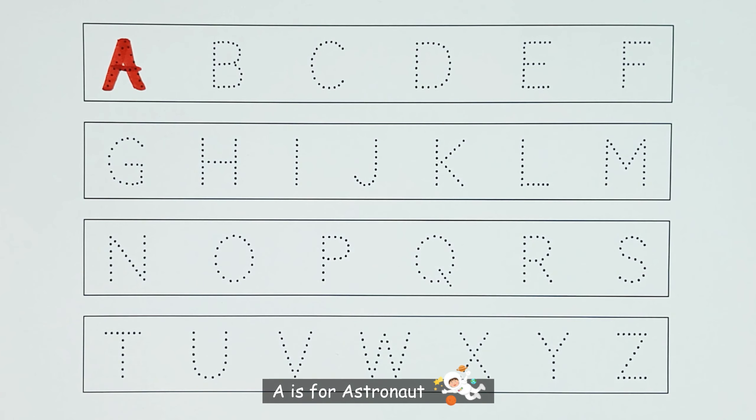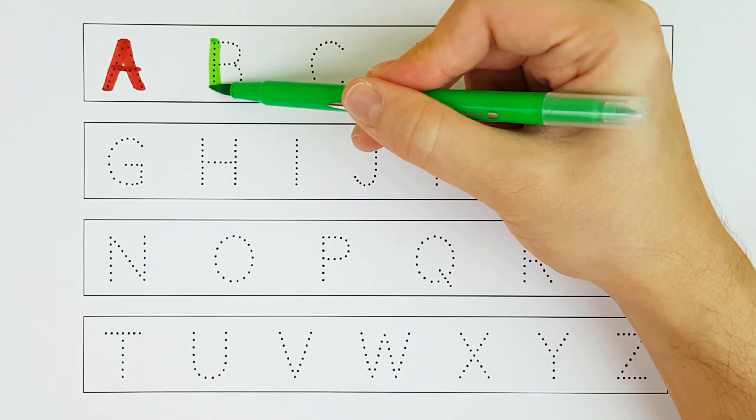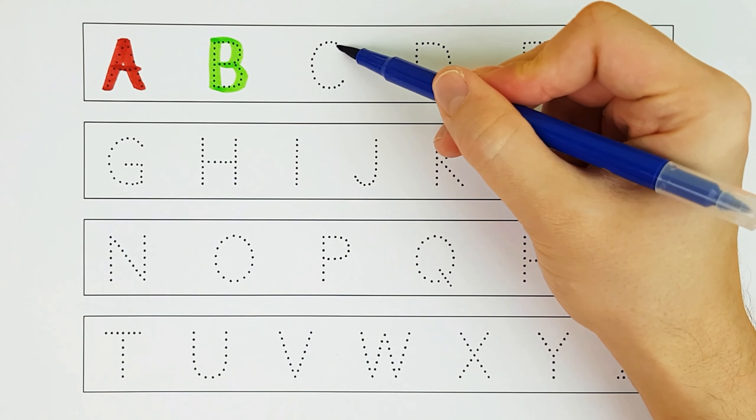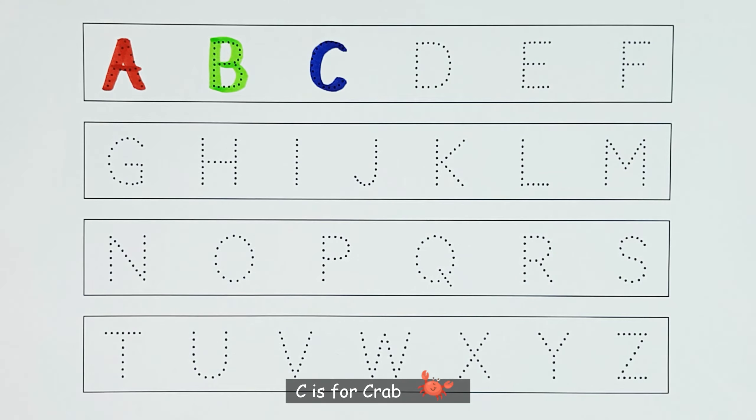A. A is for astronaut. A. B. B is for bear. B. C. C is for crab. C.